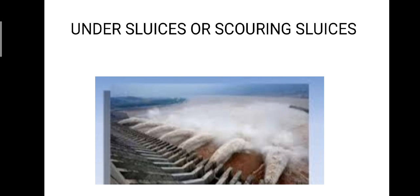Under sluices are the openings provided at the base of the weir or barrage. These openings are provided with adjustable gates; normally the gates are kept closed. Suspended silt goes on depositing in front of the canal head regulator. When the silt deposition becomes appreciable, the gates are opened and the deposited silt is loosened with an agitator mounted on a boat, and the muddy water flows towards the downstream side through the scouring sluices.